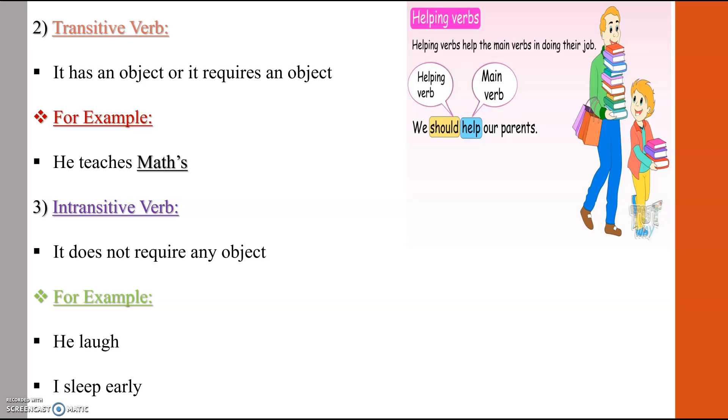For example, he teaches maths. In this sentence, maths is basically an object. So it is called a transitive verb because it requires an object. While another type is opposite to transitive verb.